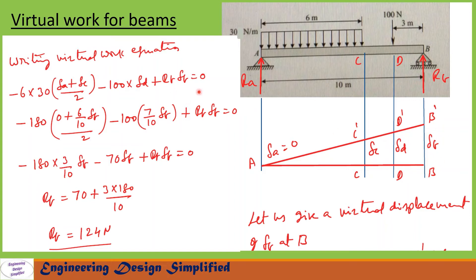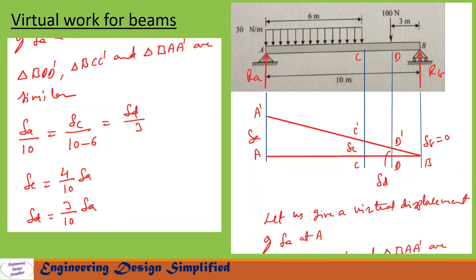We substitute delta_C and delta_D in terms of delta_B, and delta_A = 0, into the virtual work equation. After substituting all those values and simplifying, we get reaction at B: RB = 124 Newtons.